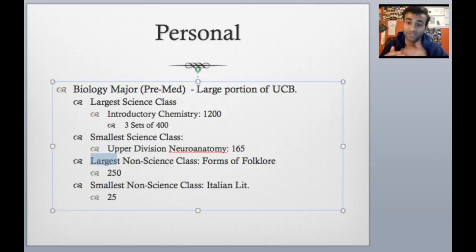My largest non-science class was this class called Forms of Folklore. It was actually a very interesting class that talked about different types of folk stories around the United States and around the world. That was 250 people. My smallest non-science class was an Italian literature course I took, and that was only 25 students. These are all just from my personal experiences over four years.